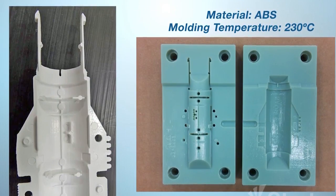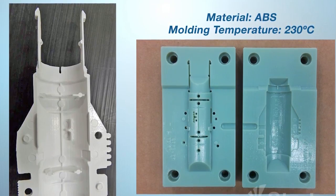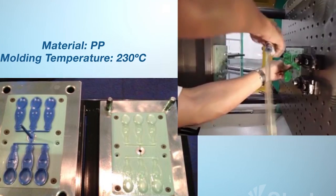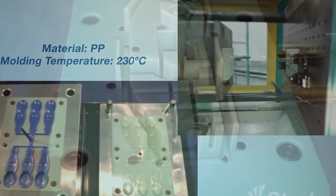PolyJet addresses form and fit prototypes and now functional prototypes in end-use materials. For form and fit, 3D print apart. For functional review, 3D print the injection mold.